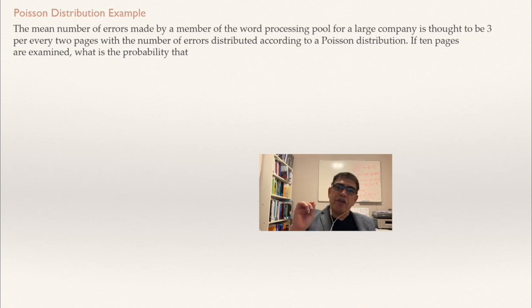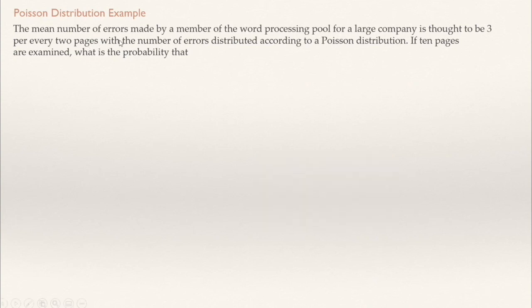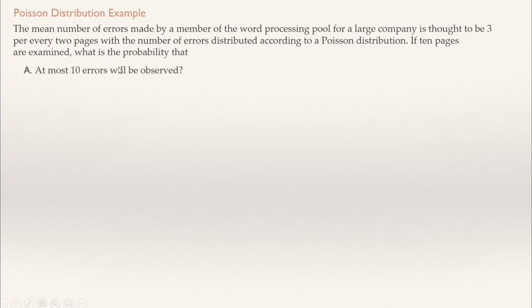The problem I will be using to explain all of this: the mean number of errors made by a member of the word processing pool for a large company is thought to be three per every two pages, with the number of errors distributed according to a Poisson distribution. If 10 pages are examined, what is the probability that at most 10 errors will be observed?